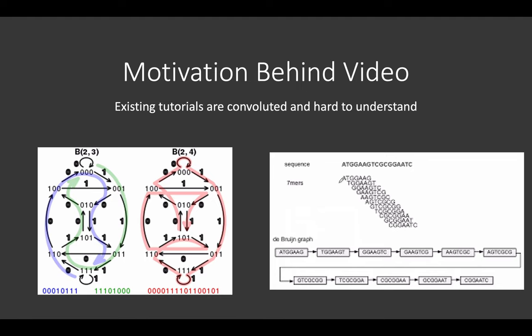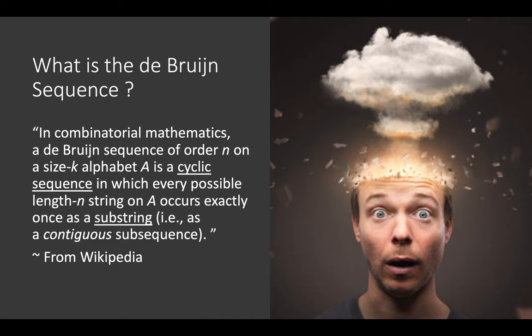I'll kick off with the definition of the De Bruijn sequence. I actually copied this definition from Wikipedia: in combinatorial mathematics, a De Bruijn sequence of order n on size k over a alphabet is one in which every possible substring of length n occurs exactly once as a contiguous subsequence. As you can see, it's pretty tough to understand the definition, so to illustrate what this sequence really is, I'm going to use a concrete numerical example.